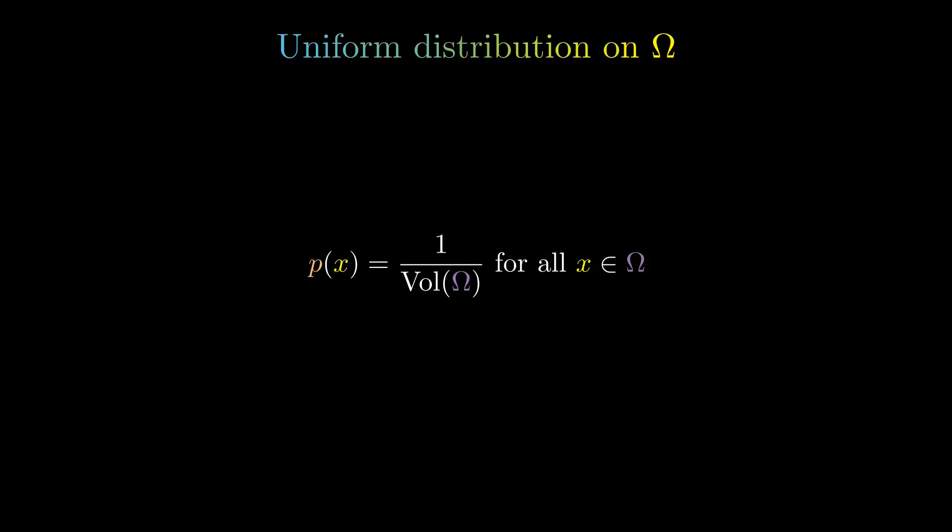The simplest option is the uniform distribution. Its density function is constant over its support, omega, and equals the reciprocal of the volume of omega. Its main advantages are its simplicity and ease of implementation.